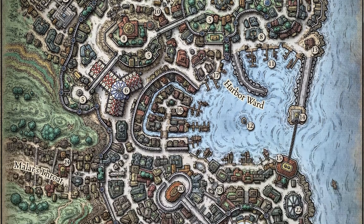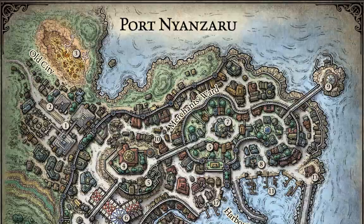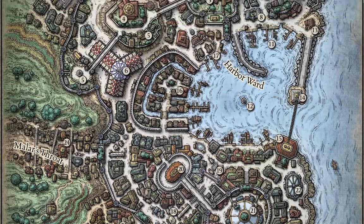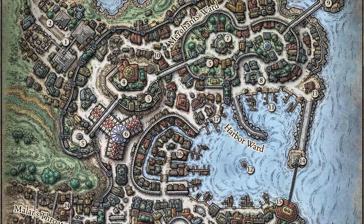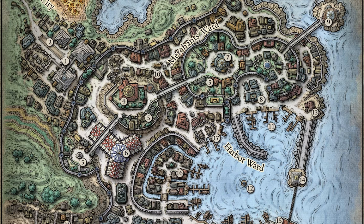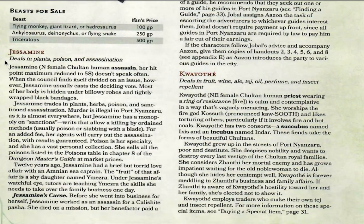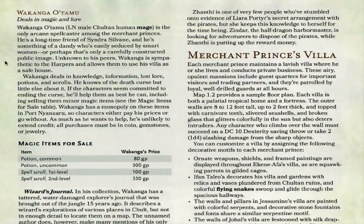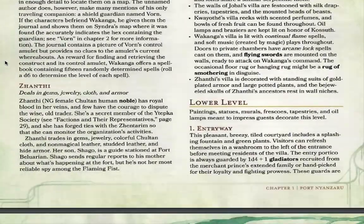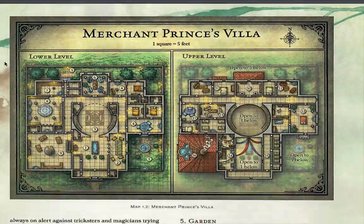The whole of Port Nyanzaru is going to have a massive party called the Festival of Life, a week-long celebration. During this week there will be a discussion among all the merchant princes about who will take over the city. Assassination is openly paid for in Port Nyanzaru, and Jasmine holds the monopoly on assassination and poison. There's always a risk that merchant princes might assassinate each other to gain political power.